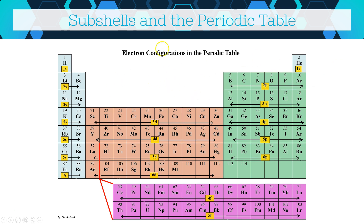The way the periodic table is structured actually reflects those subshells directly. The top two elements (hydrogen and helium) are filling the 1s subshell. The left two columns are the s-block, the right-hand columns are the p-block, the transition metals are the d-block, and the lanthanides and actinides at the bottom are the f-block. For example, sulfur's last subshell is 3p — it's in the third row and in the p-block. Potassium's last electron goes into 4s.